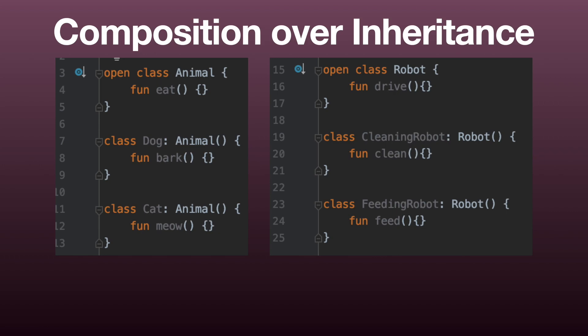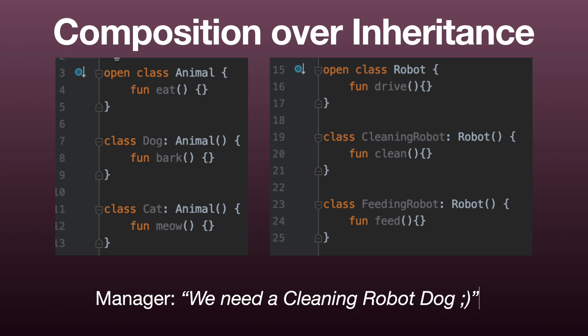Then your product owner or manager comes to you and says we need to add a little something to our ecosystem — our users love the application and the most requested feature is that we need a cleaning robot dog. This hierarchy now does not look so good. The cleaning robot dog will need to bark, clean, and also drive, but it has no need to eat. So we cannot inherit from two different classes. Inheritance has locked us. We could try to fiddle around and add another superclass, but it's clearly a hack that will become a burden down the line.